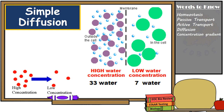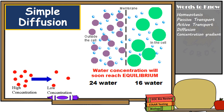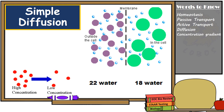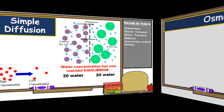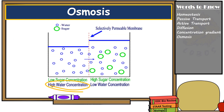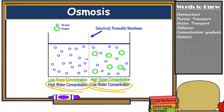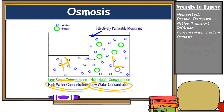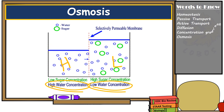Water molecules are small and can easily diffuse across the cell membrane. Water is extremely important to life, and most cells are composed primarily of water, which is why the diffusion of water across a selectively permeable membrane has its own name: osmosis. Osmosis is the movement of water molecules through the membrane from a place of higher concentration to a place of lower concentration. Water may move either into or out of the cell by osmosis. The difference in concentrations on opposite sides of the cell membrane — known as the concentration gradient — makes osmosis possible.